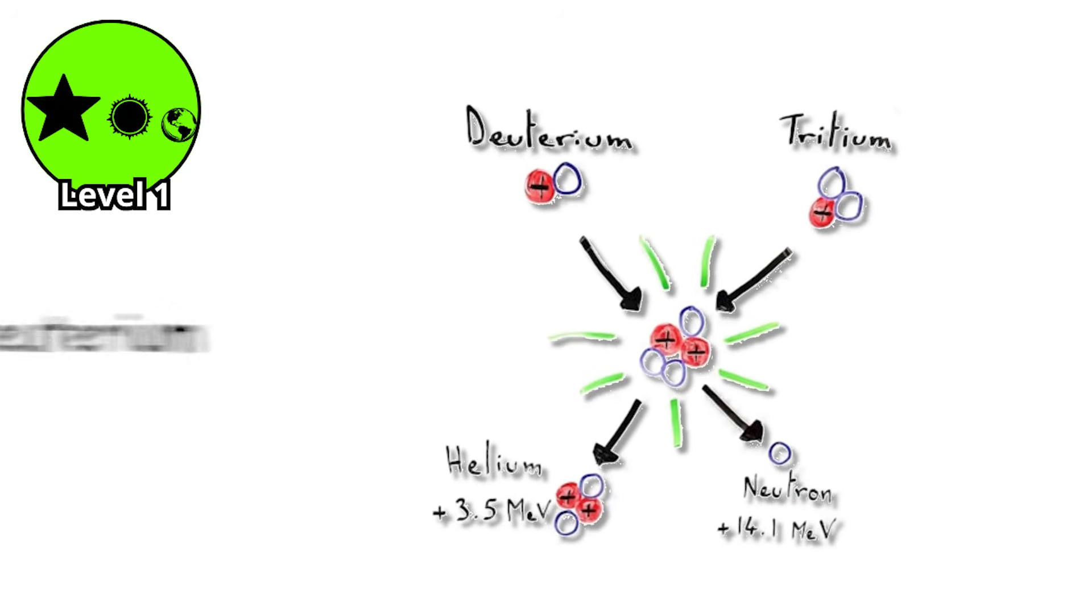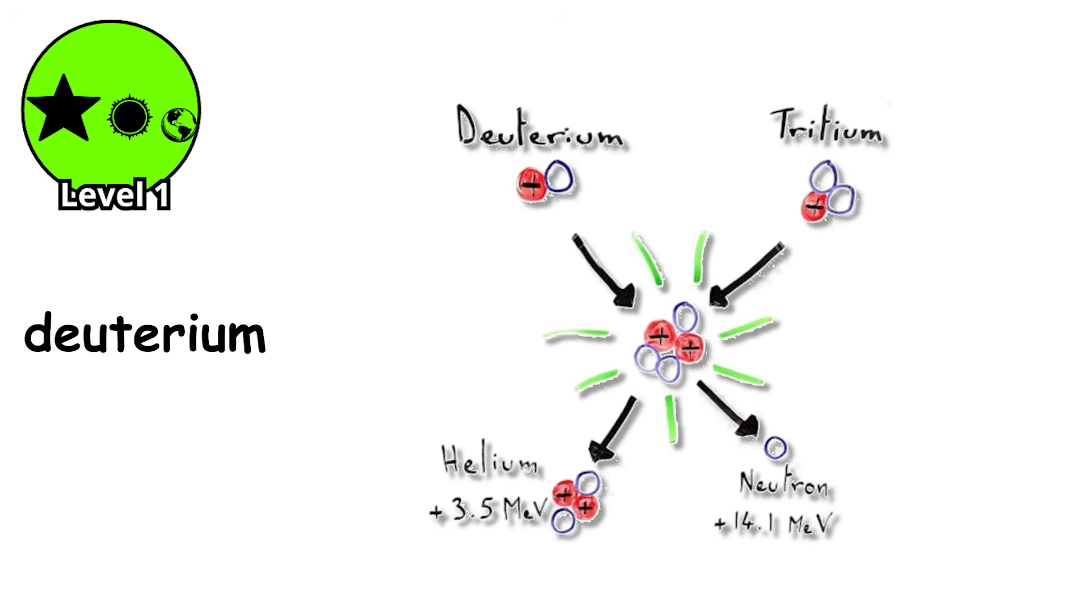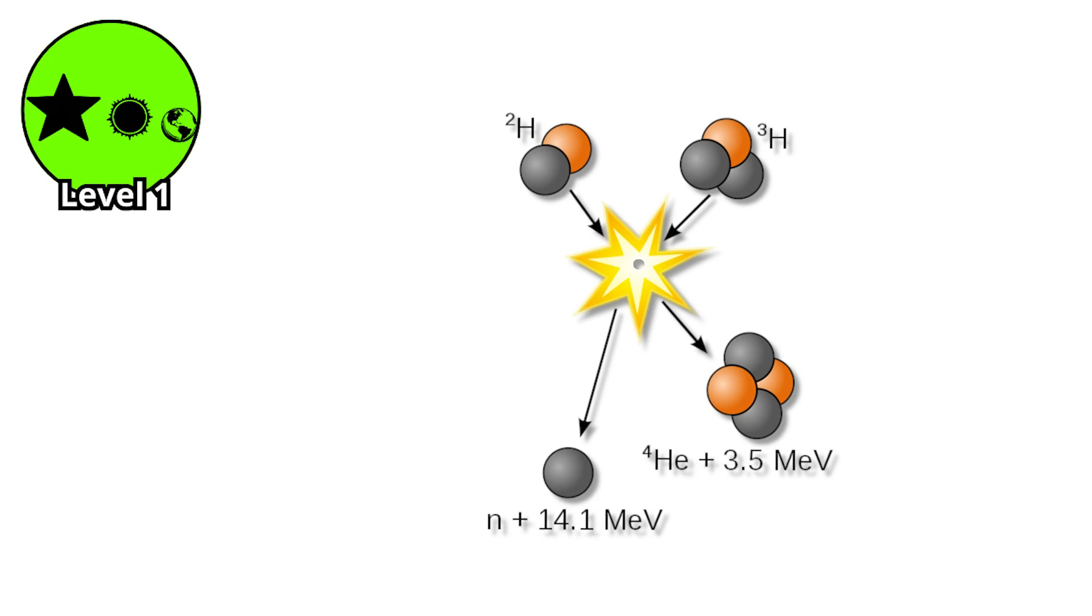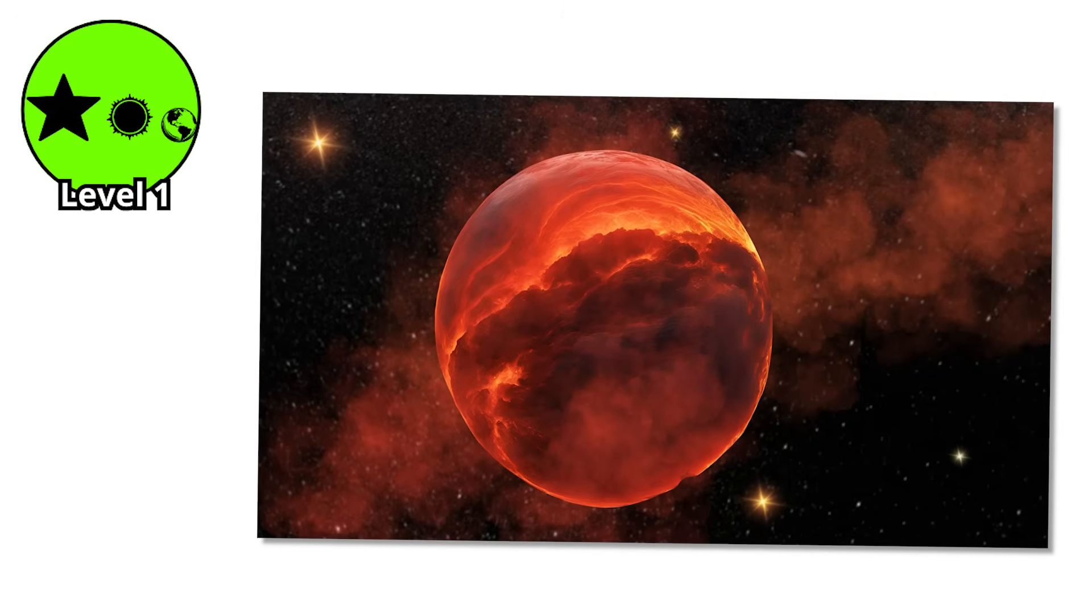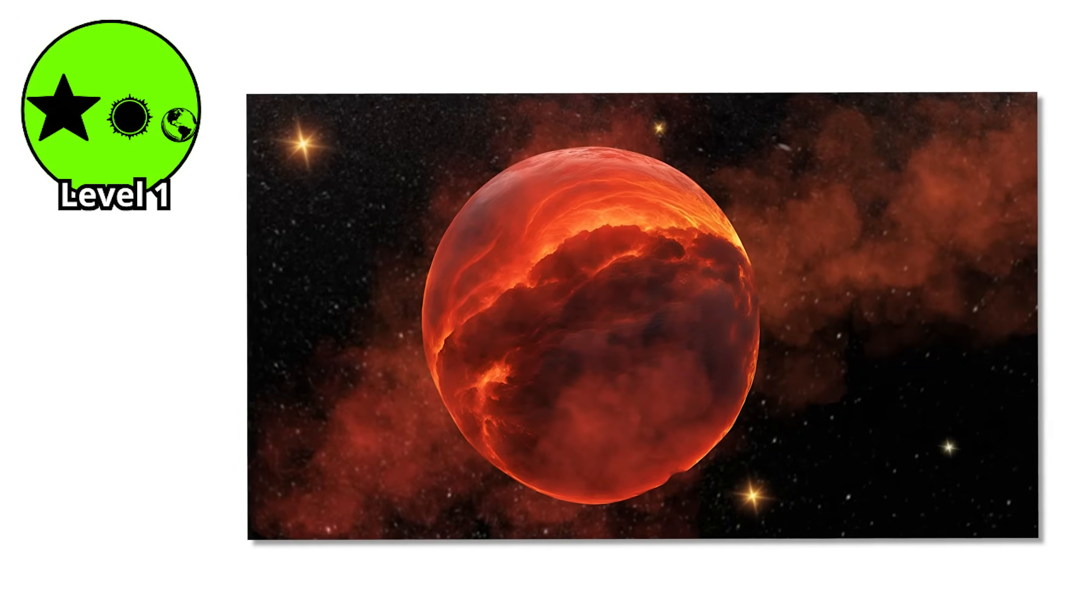What they can do is fuse deuterium, a heavier isotope of hydrogen, but only for a brief period after formation. Then they're done. They spend the rest of their existence slowly cooling off, radiating away the heat from their formation over billions of years.